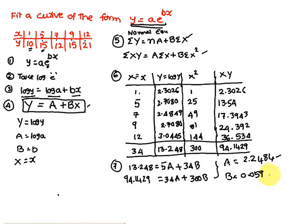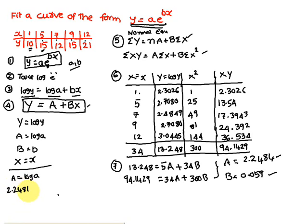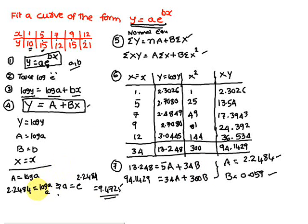These are the capital A and capital B values. But the curve equation requires small a and small b. Since capital A = log(small a), we have 2.2484 = log(small a) base e, which gives small a = e^(2.2484) = 9.4725. Capital B equals small b, so small b = 0.059.